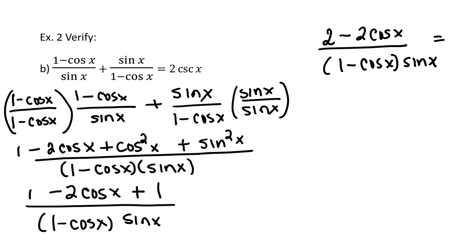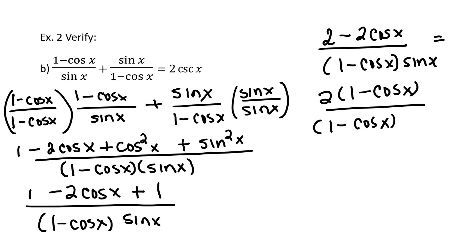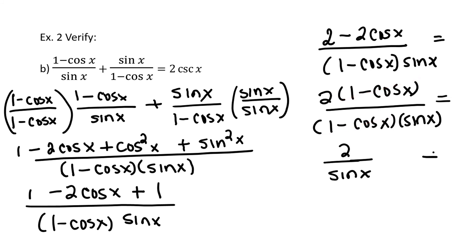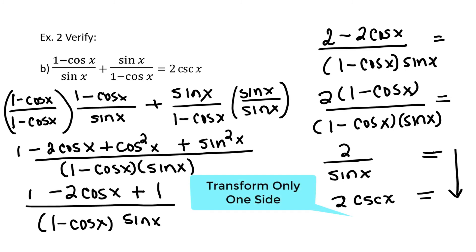I can factor out a 2 from the numerator, giving 2 times (1 minus cosine x), still divided by (1 minus cosine x) times sine x. The (1 minus cosine x) terms cancel, and we get 2 divided by sine x. Since 1 over sine x is the reciprocal for cosecant x, this is 2 times cosecant x. We have demonstrated by transforming the expression on the left-hand side to match the expression on the right-hand side that this is indeed an identity.